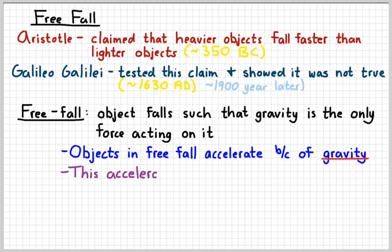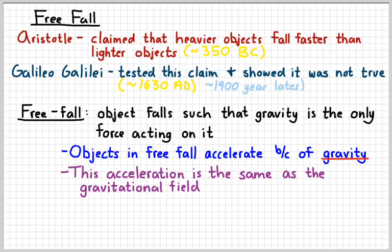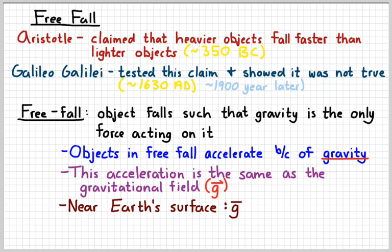So the thing about these objects is that their acceleration is the same as the gravitational field. So remember, that's the little lowercase g. And near the surface of the Earth, lowercase g has a value of 9.8 newtons per kilogram. And we're going to learn later on more precisely what a newton means. But for right now, I'll tell you that that's the same as 9.8 meters per second squared.